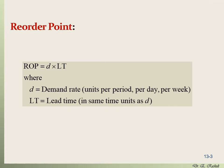Here is the basic simple formula for computing the reorder point considering the demand rate and the lead time: ROP = D × LT, where D is the demand rate in units per period (per day or per week) and LT is the lead time. Importantly, D and LT must be expressed in the same units — if D is per day, then lead time must also be in days; if D is per week, lead time must be in weeks.